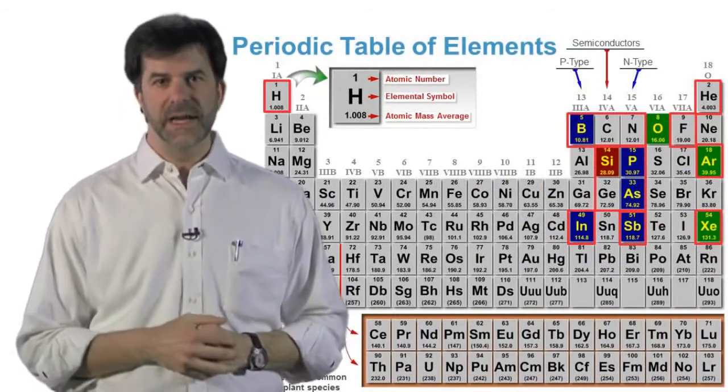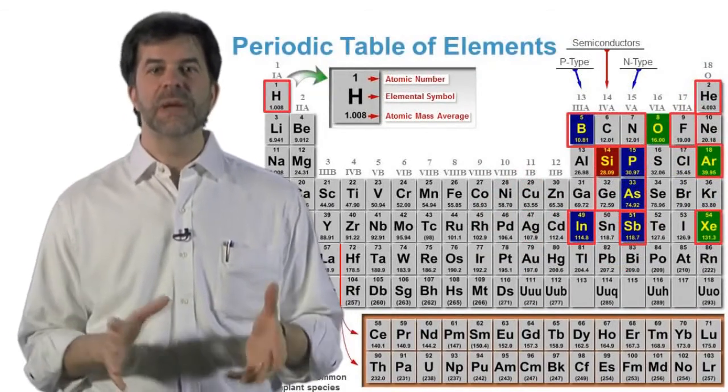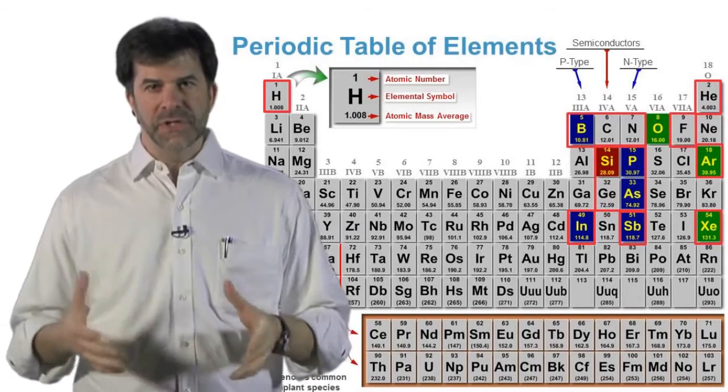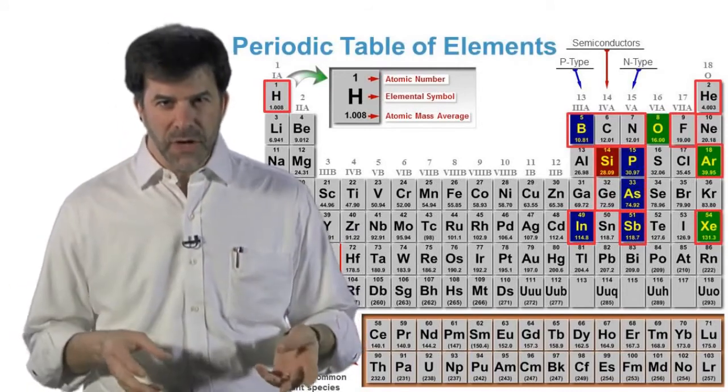In column three of the periodic table, we have what are known as acceptor or p-type dopants. Elements such as boron have only three electrons in their outer shell.